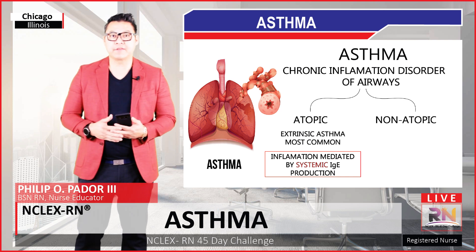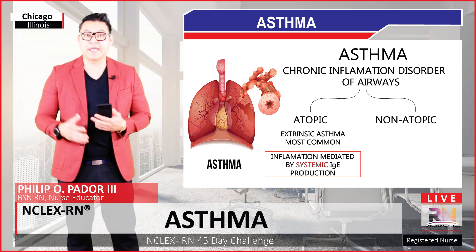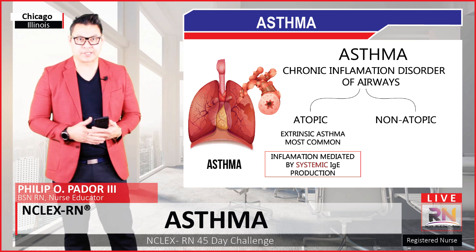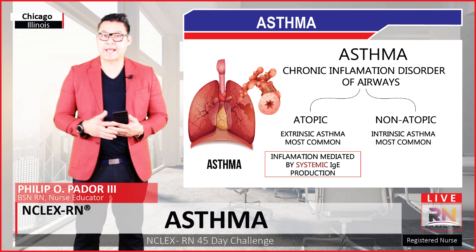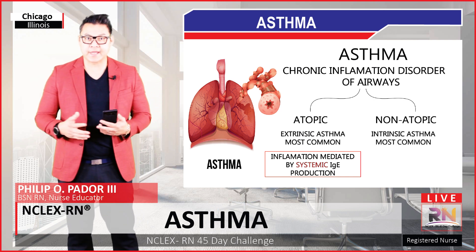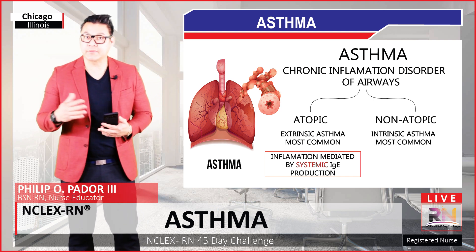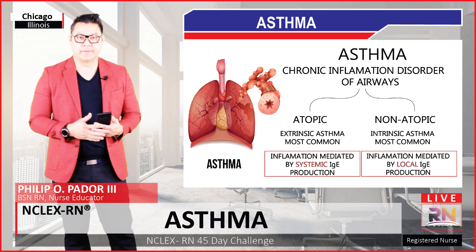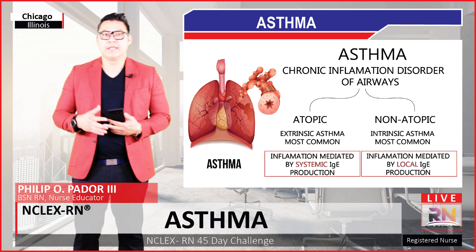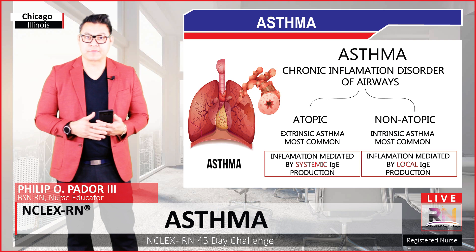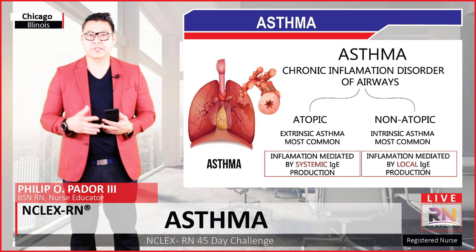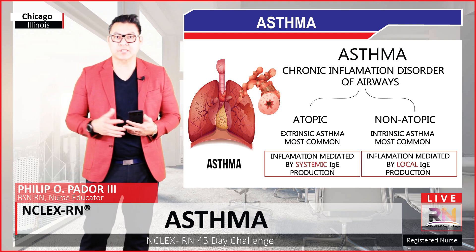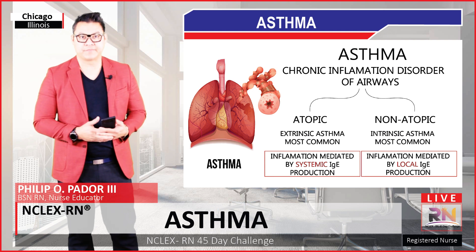Atopic asthma involves inflammations mediated by systemic IgE production. Non-atopic asthma, on the other hand, is intrinsic asthma, and this is far less common. Non-atopic asthma refers to an inflammation and constriction of the airways that is not caused by exposure to an allergen.